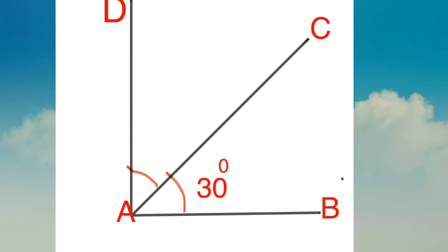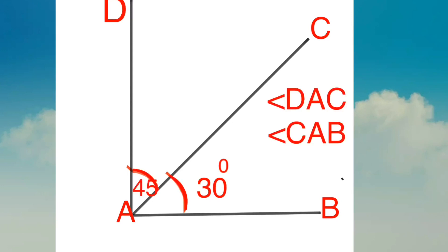You will also have a line. Looking at the figure, we focus on the angles. Angle CAB is equal to 30 degrees. Then angle DAC is equal to 45 degrees.